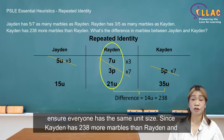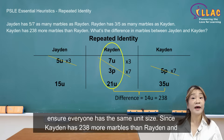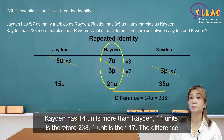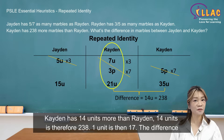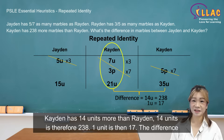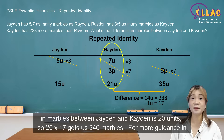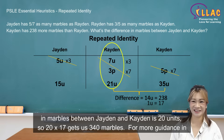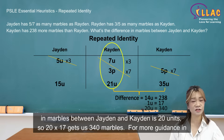Since Kayden has 238 more marbles than Raiden, and Kayden has 14 units more than Raiden, 14 units is therefore 238. One unit is then 17. The difference in marbles between Jayden and Kayden is 20 units, so 20 times 17 gives us 340 marbles.